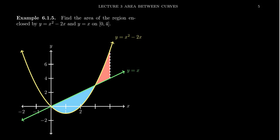Welcome back everyone for one more example about area between curves. In this example, we're going to take two functions: y equals x squared minus 2x, the parabola, and y equals x, just a standard line. And we'll find the area of the region between the goalposts x equals zero and x equals four.